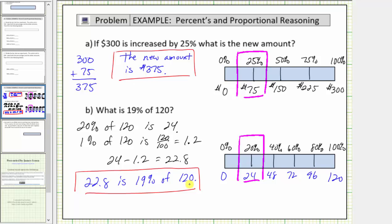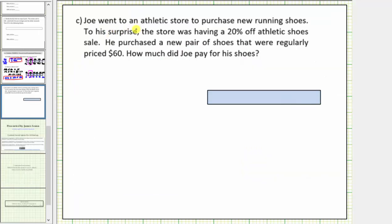So let's look at one more example. Joe went to an athletic store to purchase new running shoes. To his surprise, the store was having a 20% off athletic shoes sale. He purchased a new pair of shoes that were regularly priced $60.